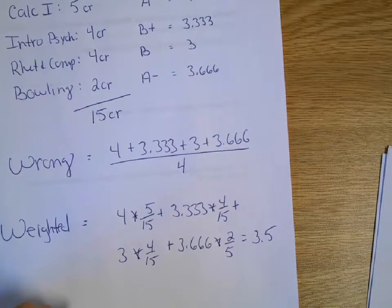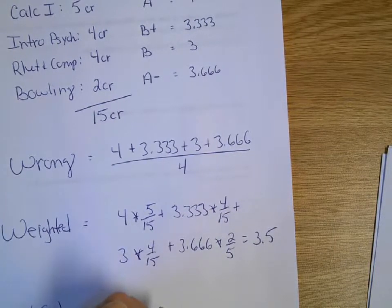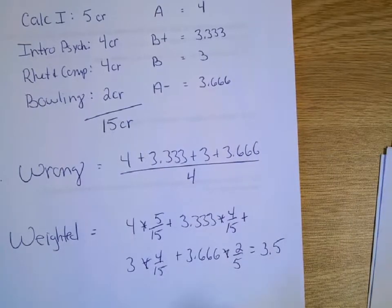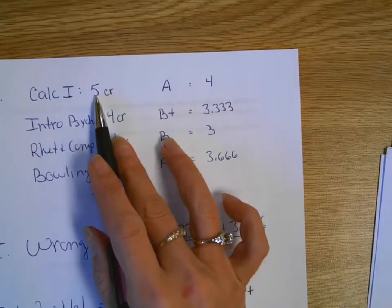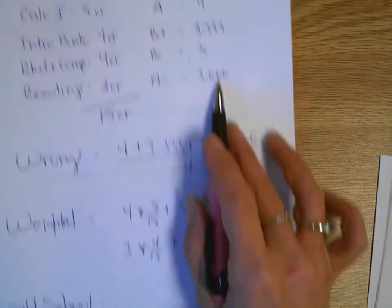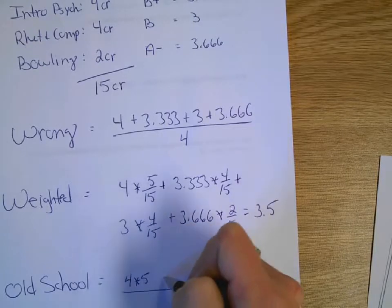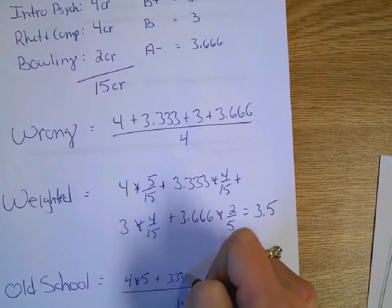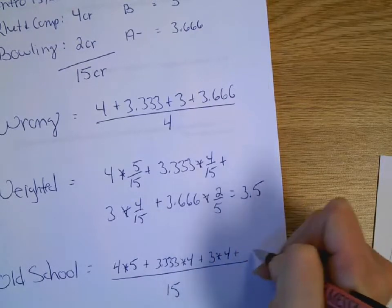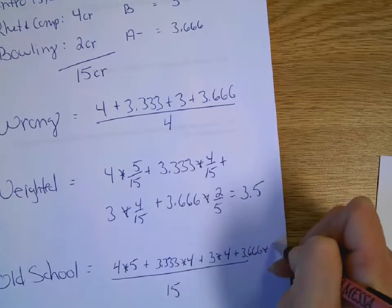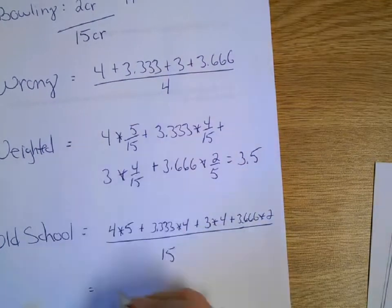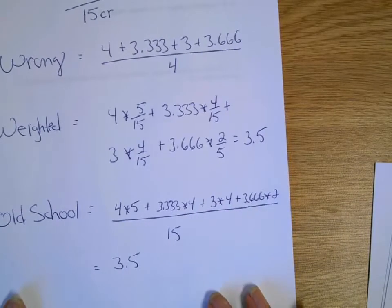Okay, the old school way to do it. Well, I see 15 credits. So, I want 15 numbers that I'm going to add so I can divide by 15. Well, what are my 15 values? Well, I think of this as 5 4.0s, 4 3.33s, 4 3s and 2 of these 3.666s. So, it would be 4 times 5 plus 3.333 times the 4, plus the 3 for the B times the 4 credit, and then the 3.66 times the 2. That's going to total up to 15 letter grades and divide by 15. And again, old school and weighted both give you the same amount. So, whichever your brain wraps around better, that's the technique you use.